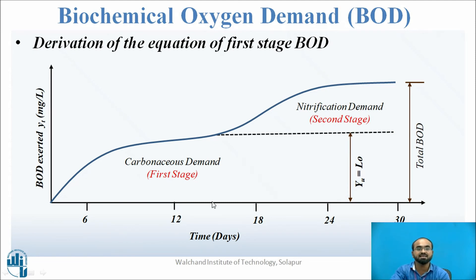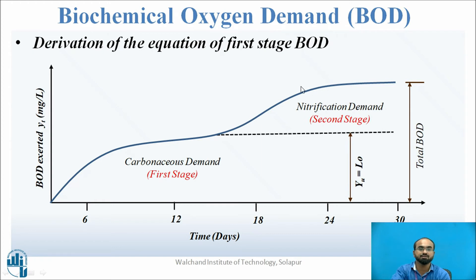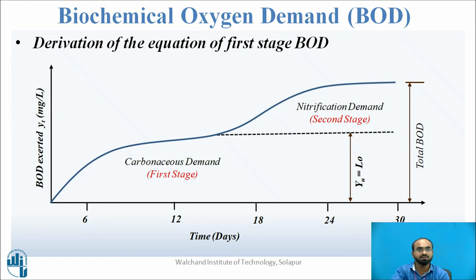After a few days, carbonaceous matter is fully biodegraded by microorganisms. Afterwards, they move towards nitrogenous matter. The amount of oxygen required by microorganisms to eat nitrogenous matter is called nitrification demand, also called second stage demand. The addition of first stage demand and second stage demand is called total demand. So there are four types of demands: ultimate BOD, BOD demand, BOD exerted, and total demand.